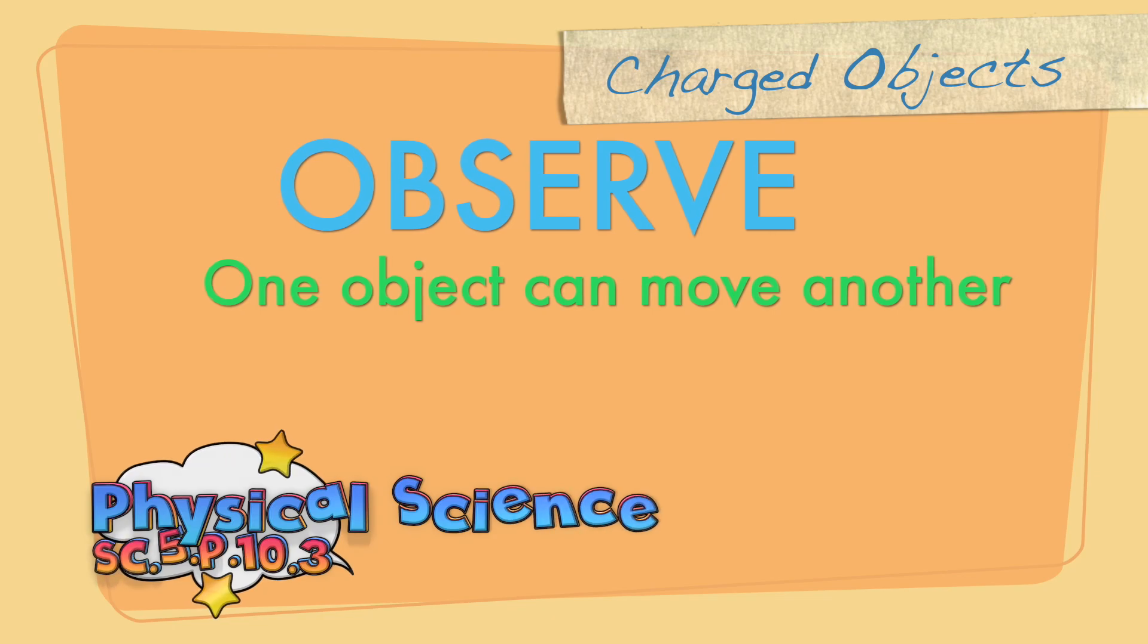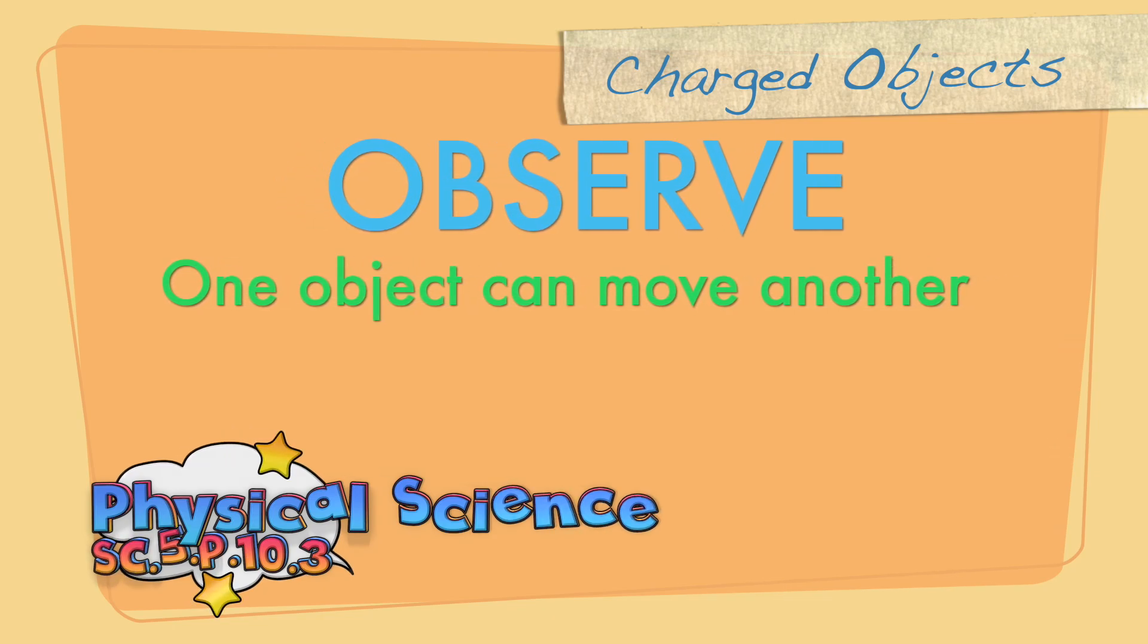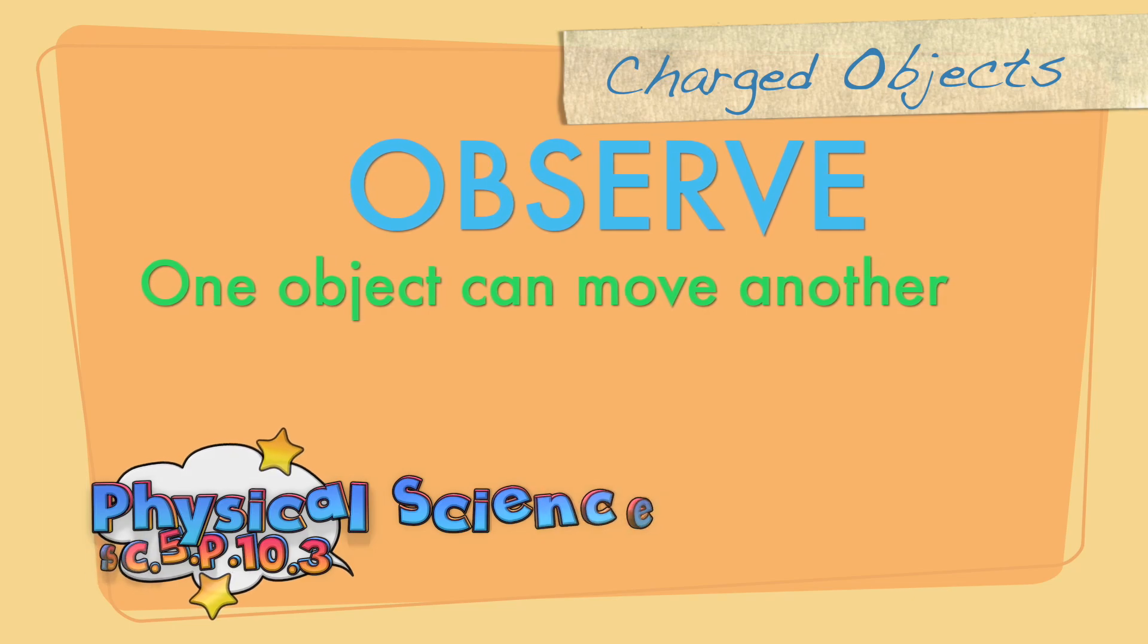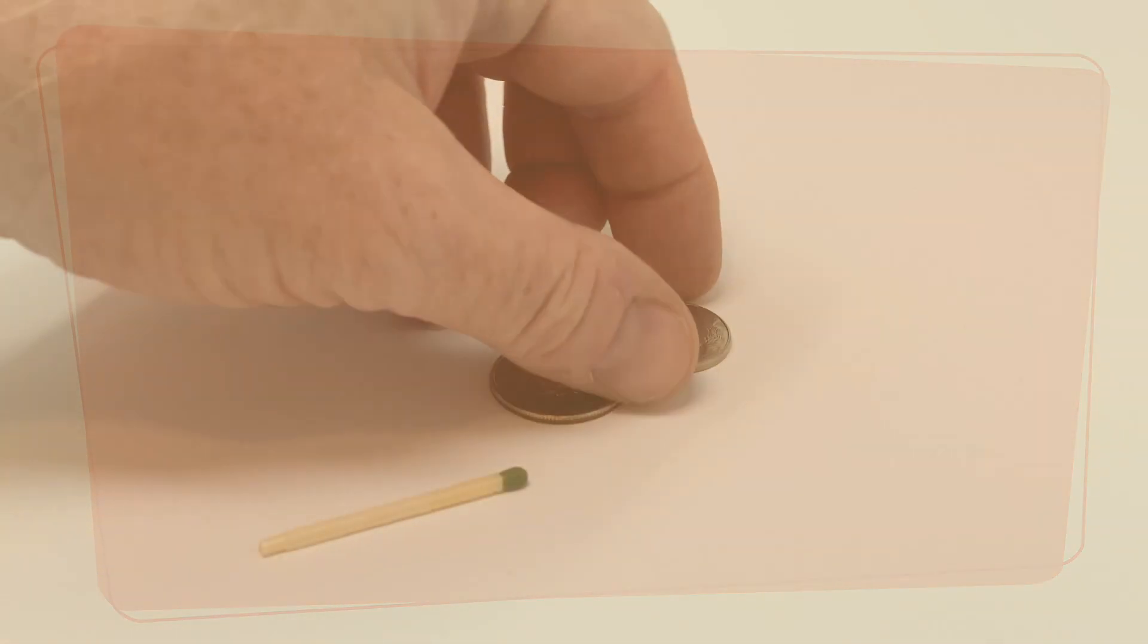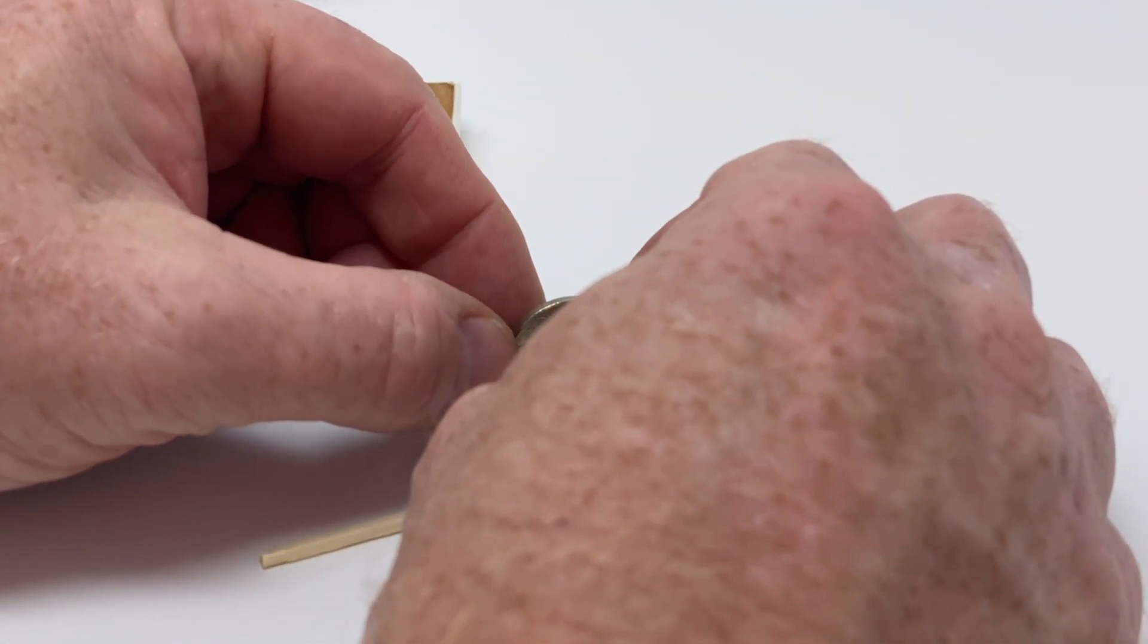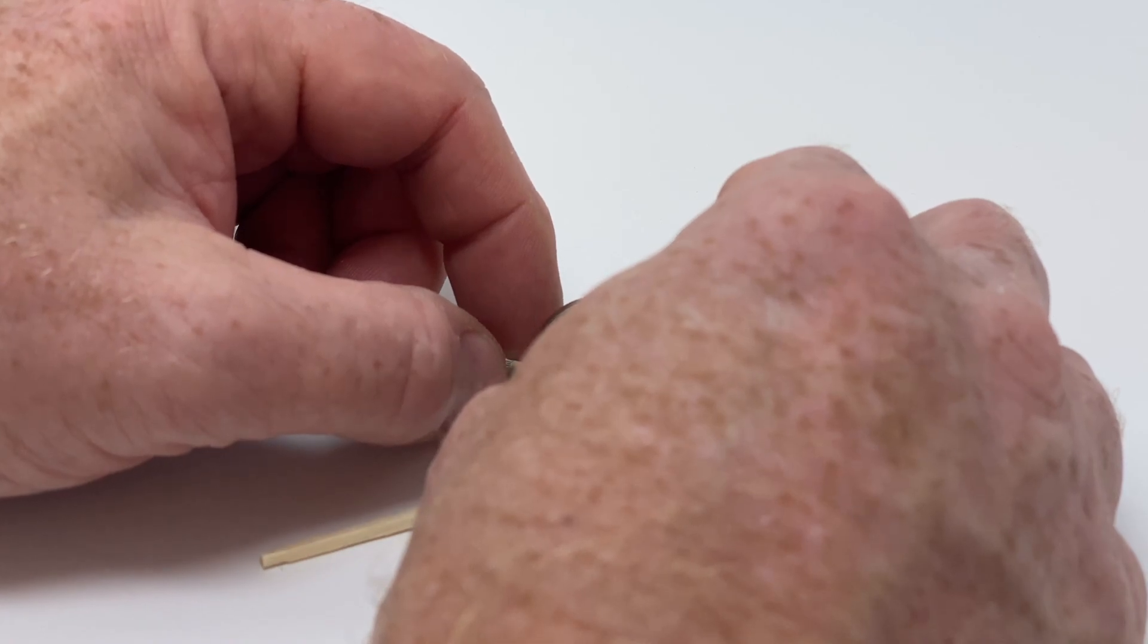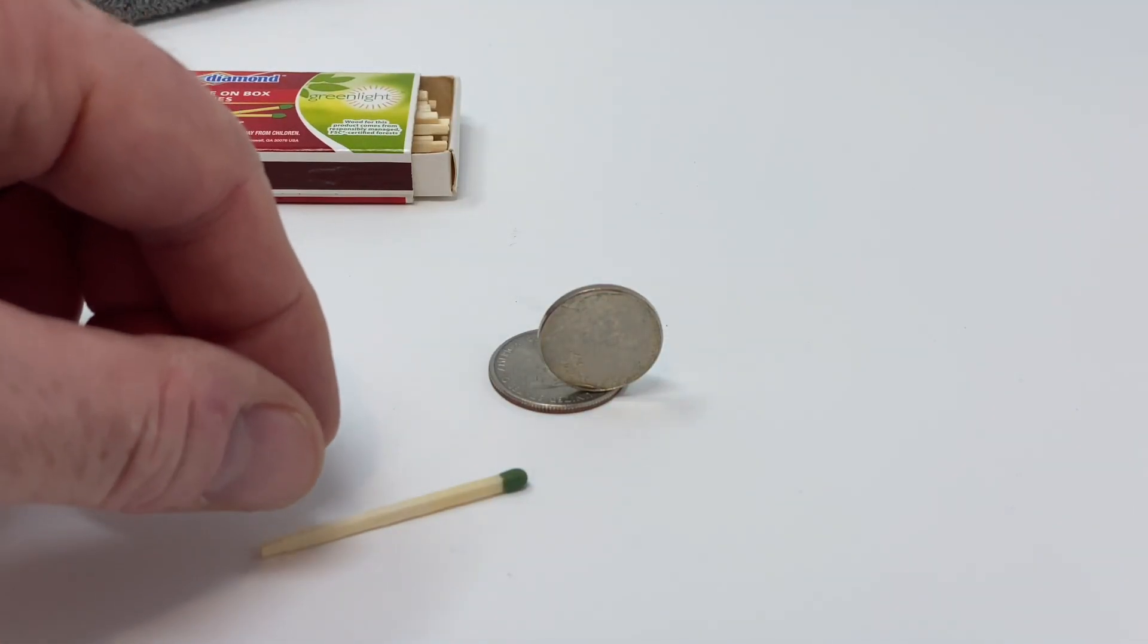Observe one object can move another. So we're going to observe one object moving another object. I've got a quarter and a nickel and I'm going to balance the nickel standing up on top of the quarter.